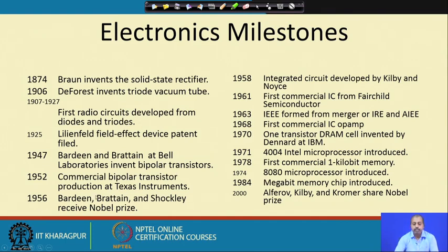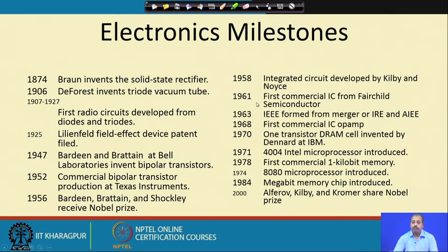In 1952, Texas Instruments started making bipolar transistors commercially. In 1956, the Nobel Prize was given to Bardeen, Brattain, and Shockley — they received the Nobel Prize for the transistor.